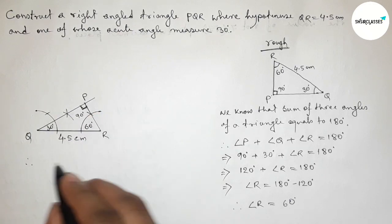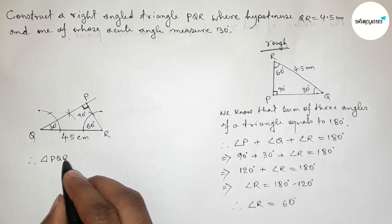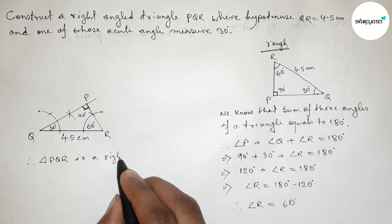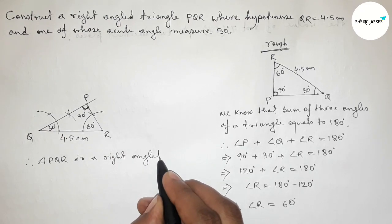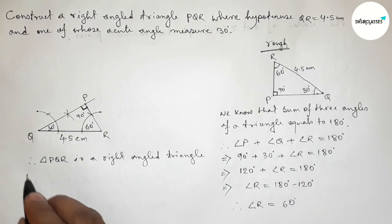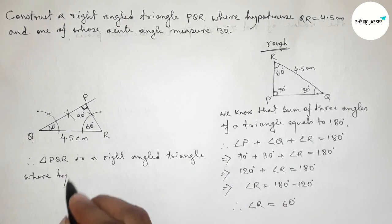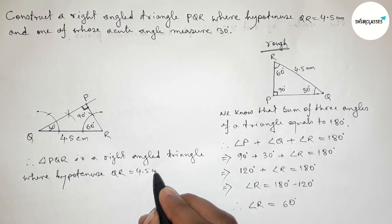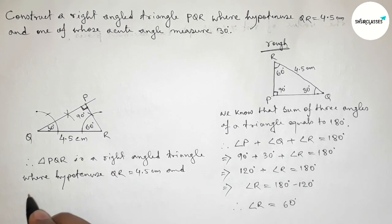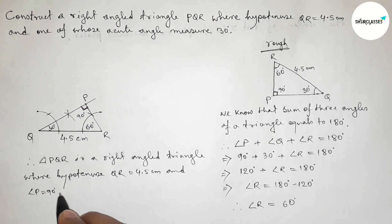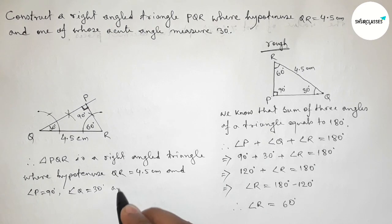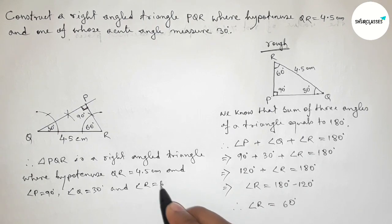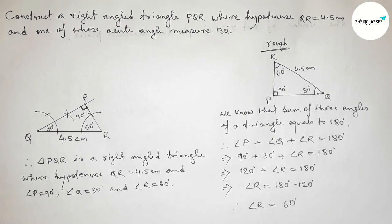Therefore, triangle PQR is a right-angled triangle where the hypotenuse QR equals 4.5 centimeters, angle P = 90°, angle Q = 30°, and angle R = 60°. That's all — thanks for watching. If this video was helpful, please share it with your friends.